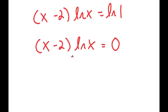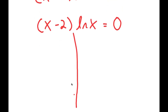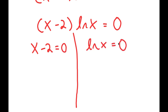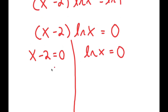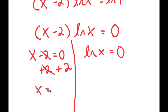From here, I get two equations. The first is x minus 2 equals 0. To solve this, I add 2 to both sides, so these cancel out, and I'm left with x equals 2.